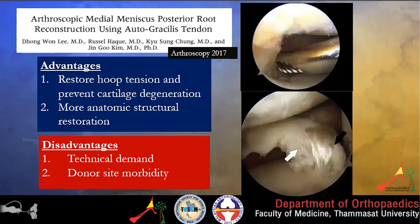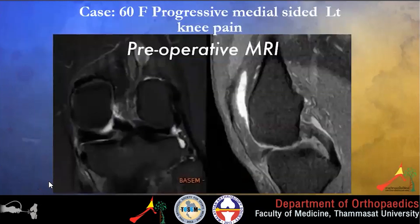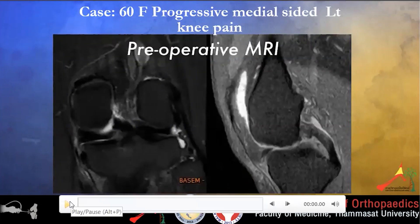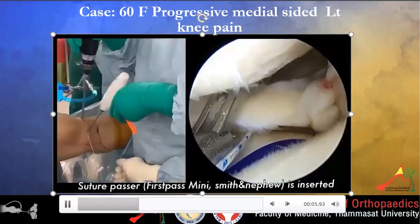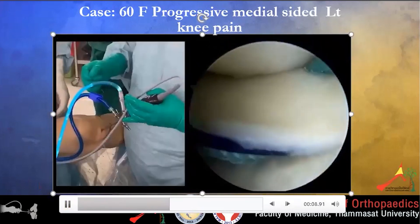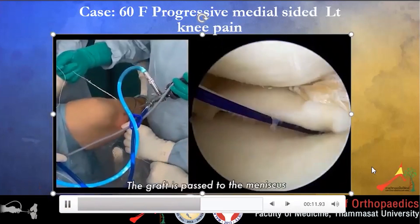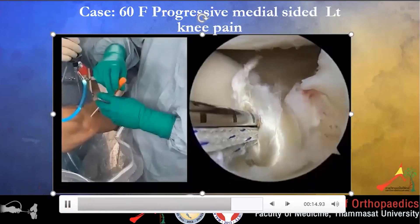Regarding reconstruction of the meniscus root, Dr. Kim proposed meniscus root reconstruction using a gracilis tendon autograft. The advantages are restoration of hoop extension, prevention of cartilage degeneration, and a more anatomical structural restoration. The disadvantages are that it is technically demanding and there is donor site morbidity. This is a 60-year-old female with progressive medial-sided left knee pain. The pre-op MRI is shown here.